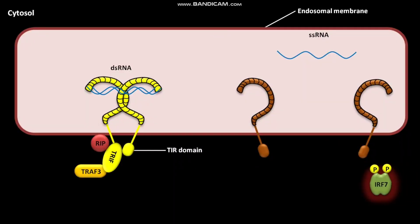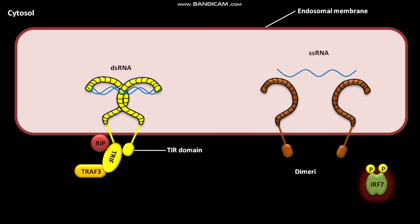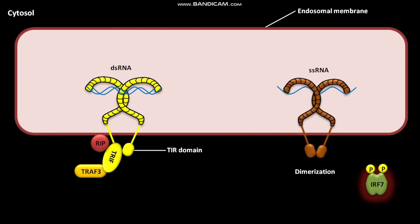Another TLR present on the endosomal membrane is TLR7. TLR7 binds viral dsRNA. Due to the binding of viral dsRNA, TLR7 receptors undergo dimerization.